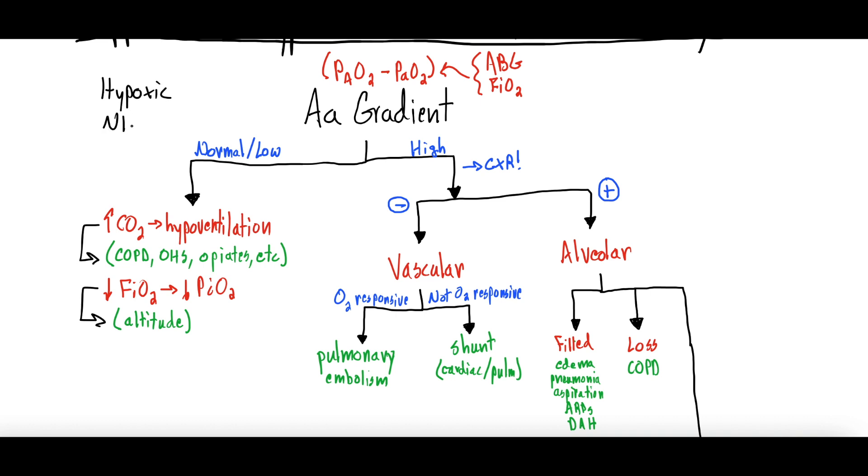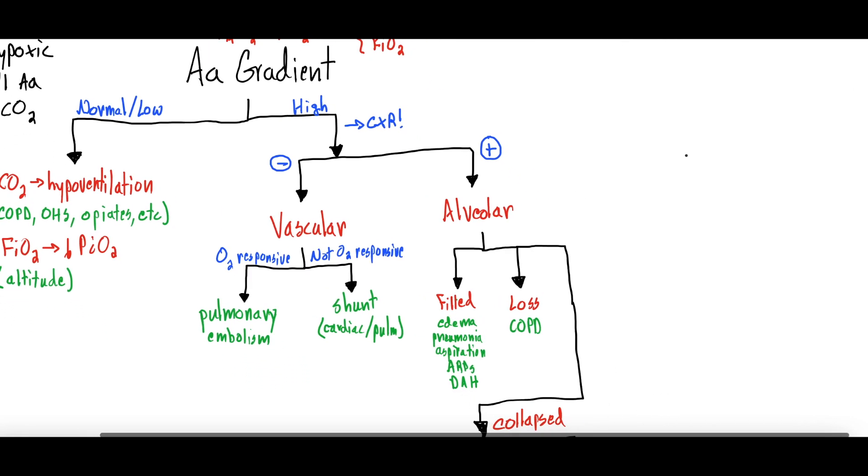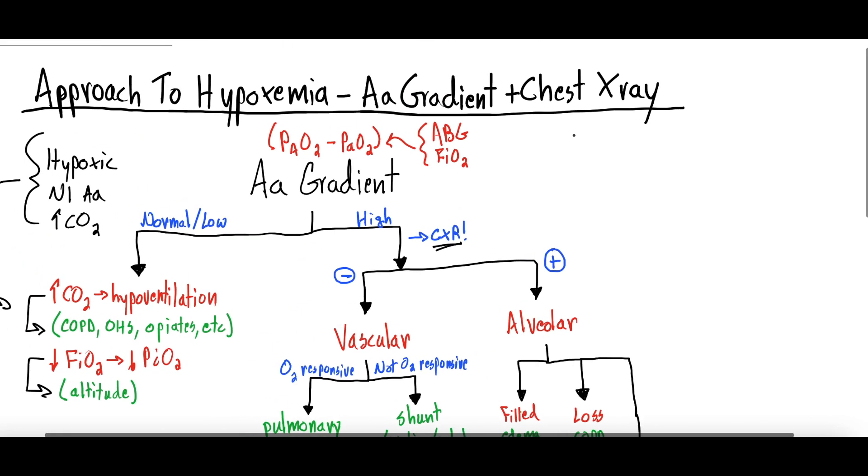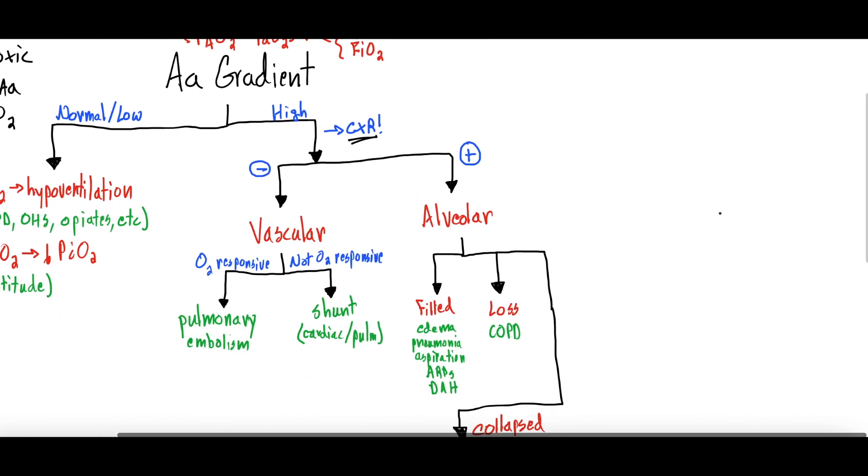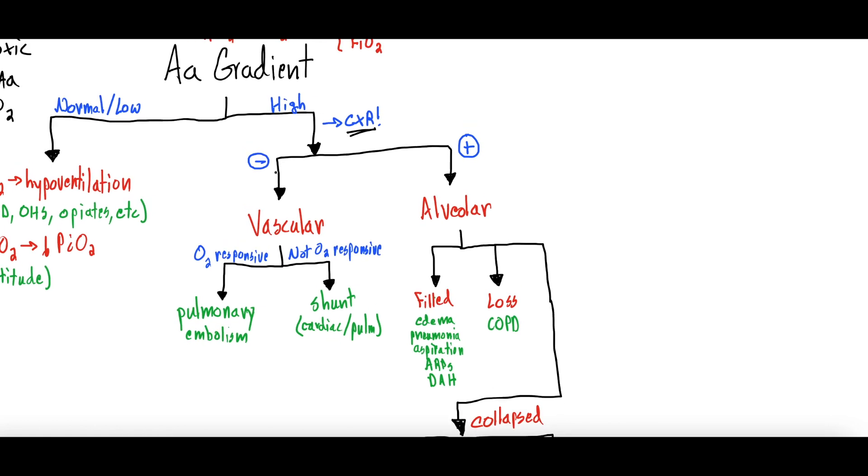The other thing that can cause a normal or low A-a gradient if their CO2 is normal would actually just be that they have a low amount of oxygen they're breathing in, and this would be like someone who's at high altitude. Their pressure of inspired oxygen is too low. This one's more rare, especially for those of us that hang out at sea level and not up on mountains. So normal low A-a gradient is primarily going to be hypoventilation syndromes in which case you'll also see the CO2 high, and that kind of gives you your differential diagnoses for that side of hypoxemia.